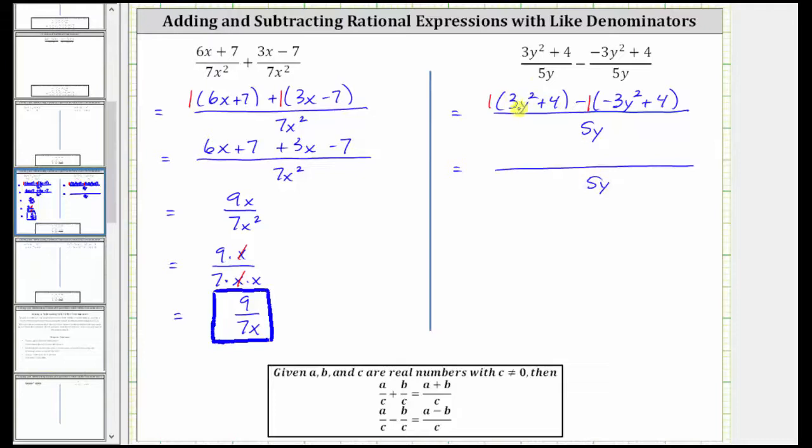One times the quantity 3y squared plus 4 is 3y squared plus 4. And now distributing negative one, we have negative one times negative 3y squared, which is positive 3y squared, giving us plus 3y squared. And then we have negative one times positive 4, which is negative 4, giving us minus 4.